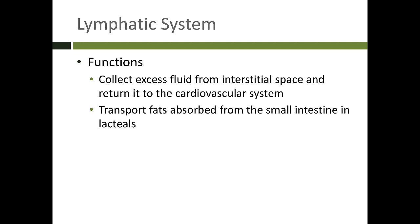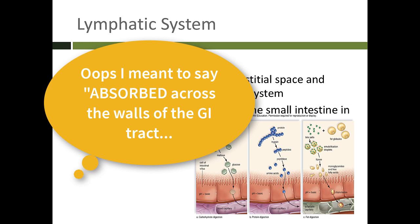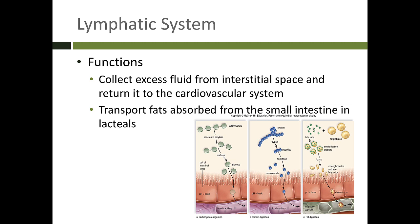The second function of the lymphatic system is to transport fats that were absorbed from the small intestine. Remember, in the digestive system, both carbohydrates and proteins are able to be digested across the wall of the GI tract into the blood. However, lipids are not absorbed in this way — they are transported across the wall of the GI tract into a lymphatic capillary, also called a lacteal. The lipids will be transported with the rest of the lymph fluid through the lymphatic system and eventually join the circulatory system when the lymph returns to circulation.